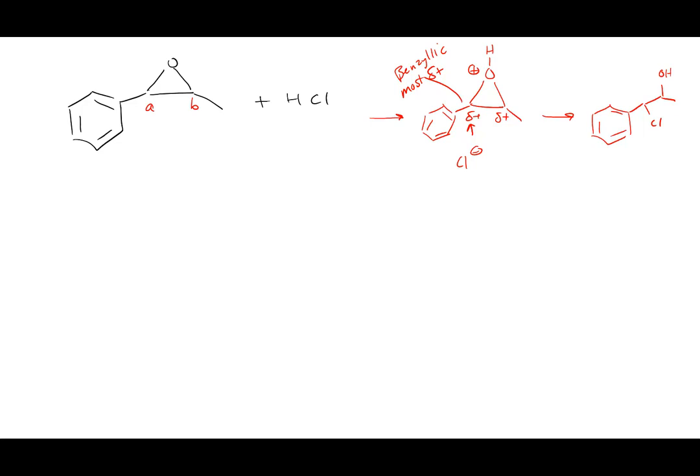If you were to make an argument for B — the steric hindrance of the ring — that would be the argument for B. But because this is a benzylic carbon, the Cl⁻ will add to the benzylic position. So this would be the major product under acidic conditions.